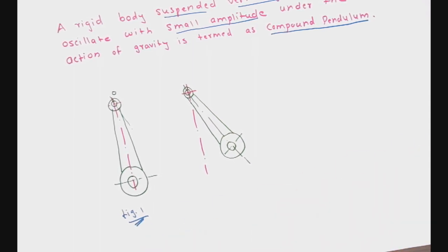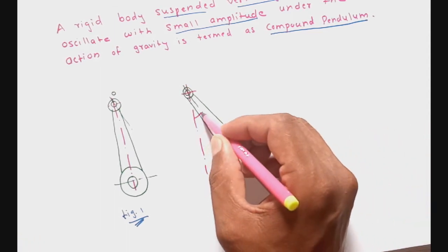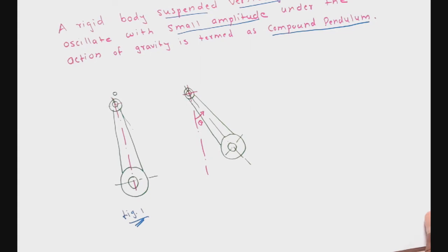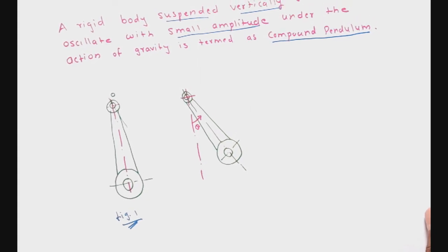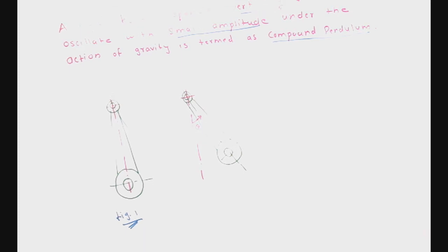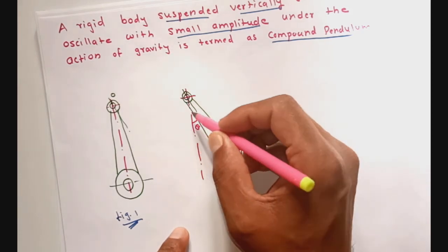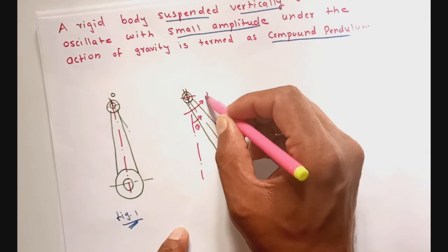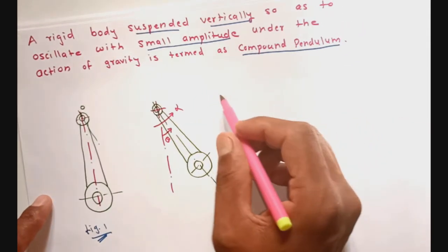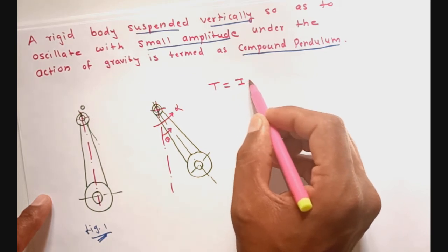Now let us displace the connecting rod by a small angular displacement theta in counterclockwise sense. We have displaced the connecting rod, hence we have changed its velocity from 0 to some value. According to Newton's second law of motion, there is a change in angular momentum of the connecting rod, so it will induce torque as a result of angular acceleration alpha in the direction of angular displacement, and the value of that torque T equals I into alpha.